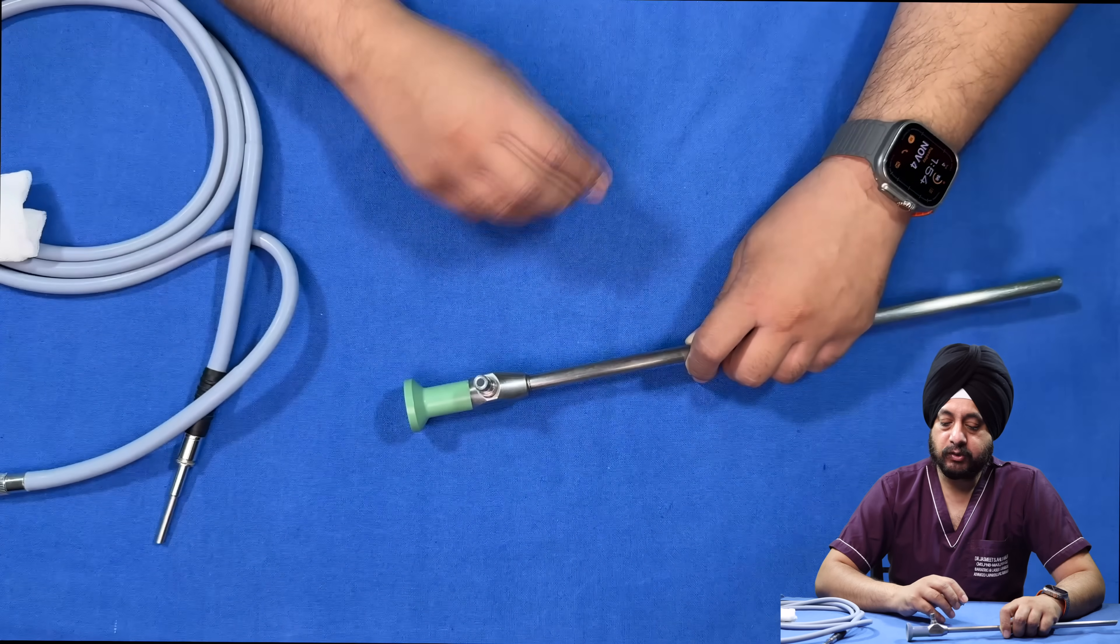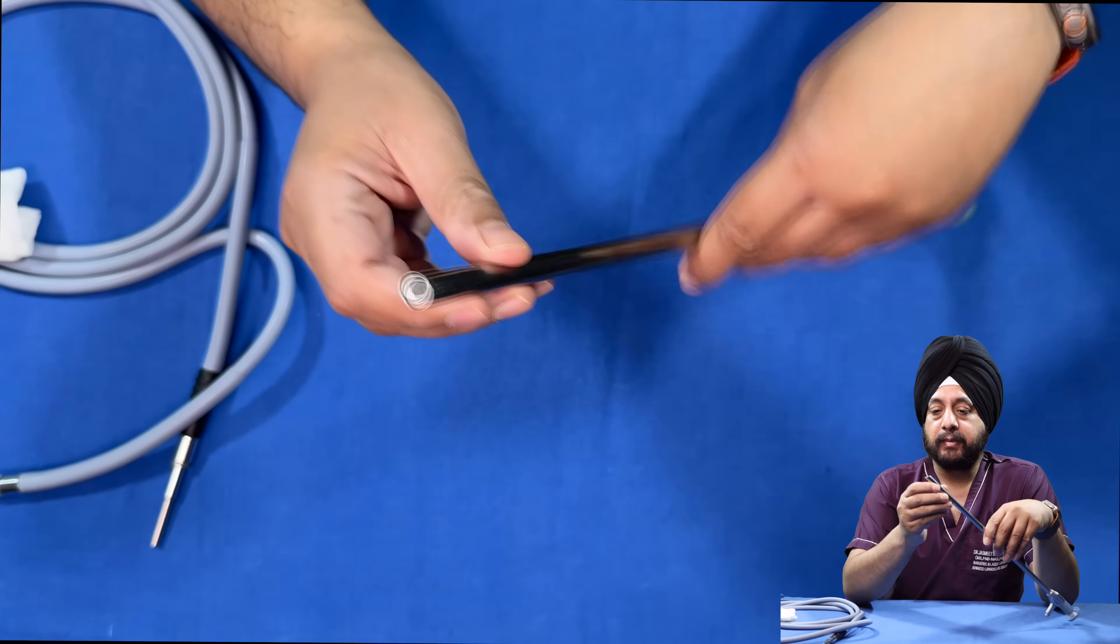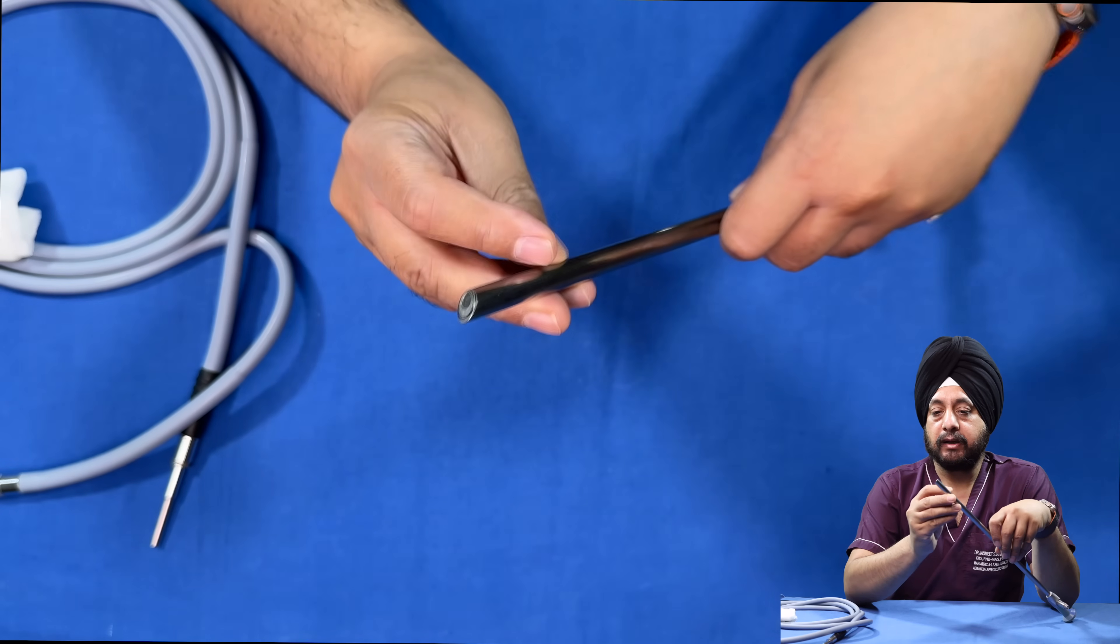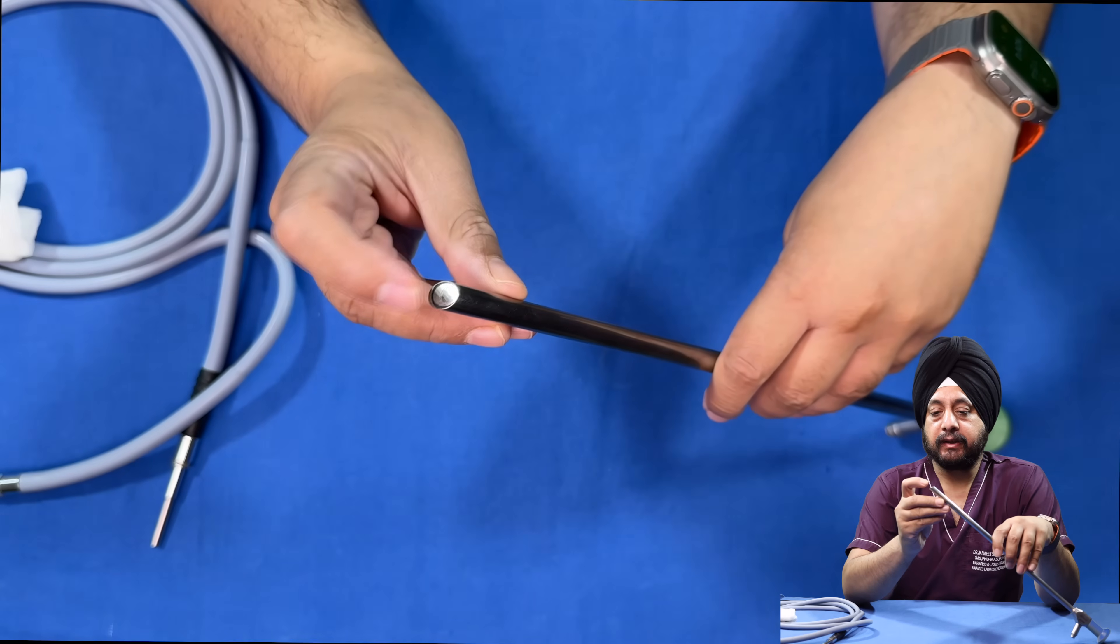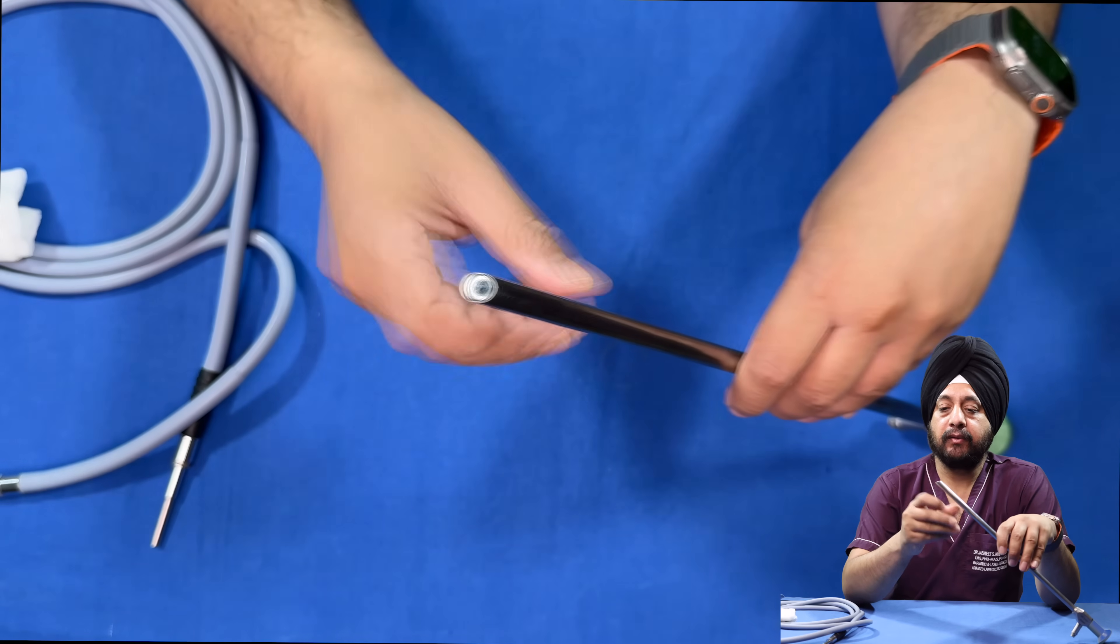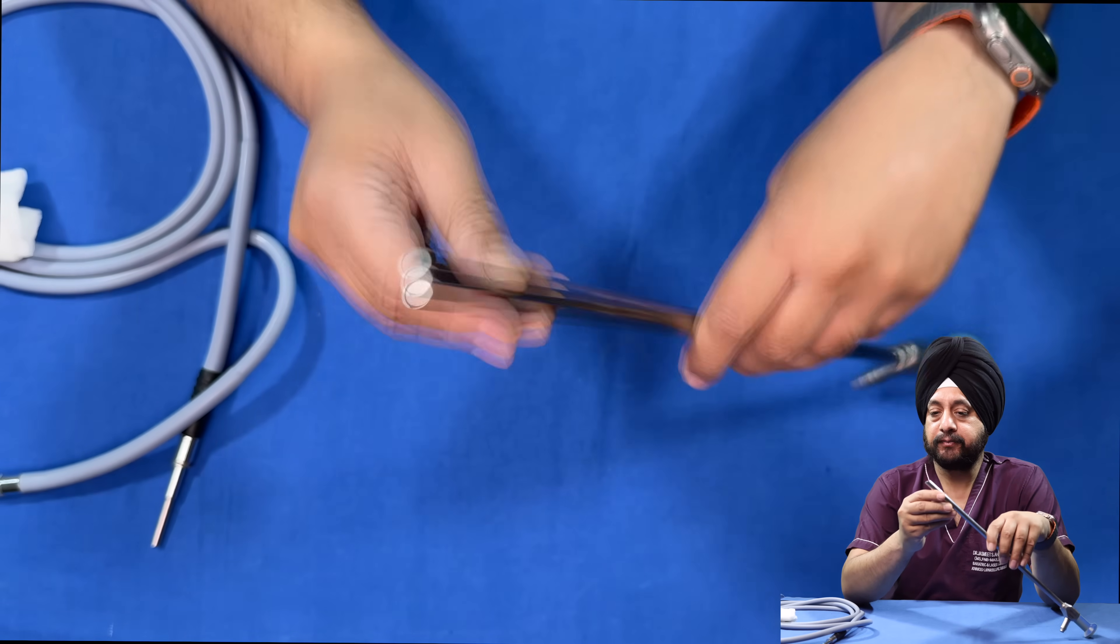Make sure there is no debris on this, otherwise your image quality will deteriorate. At the tip of the scope, again make sure you clean it well. Ensure that nothing is badly stuck on the tip after a procedure which can deteriorate the quality of the image.